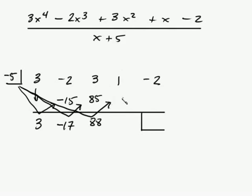Negative 5 times the 88, you're going to get a big number. Negative 440. And when you add them going down, you get a negative 439. And the last one, negative 5 times negative 439, it's going to give you a positive 2195. And you add those going down and you get 2193.